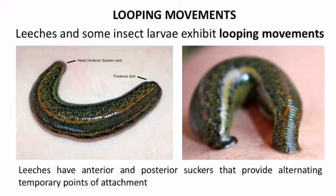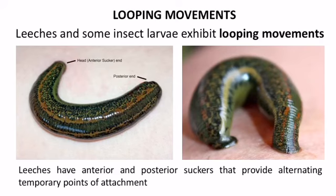The next type of movement is looping movement. Leeches and some insect larvae exhibit looping movement. In this case, the animal moves by forming loops with its body. Leeches have anterior and posterior suckers that provide alternating temporary points of attachment to the substrate.